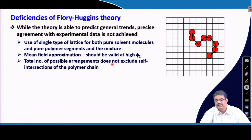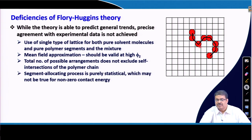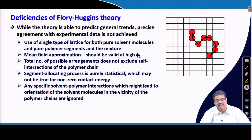The total number of possible arrangements does not exclude self-intersections of polymer chains. Polymer chains can overlap, and some of the vacant cells around a particular segment may not be available due to self-intersections — this was not considered during derivation of Flory-Huggins theory. Also, the addition of segments in the 3D cells was purely statistical, which may not be true if there is a non-zero contact energy between solvent molecules and polymer molecules. Any specific solvent-polymer interactions may lead to orientation of solvent molecules around the polymer segments, which was not considered.